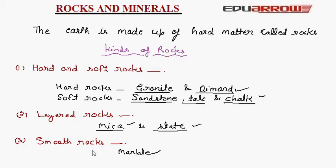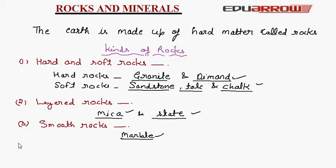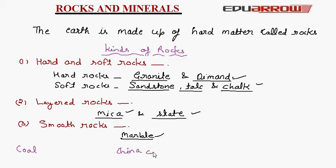There are some other kinds of rocks like coal. It is used for burning fire in houses and it can be hard or soft. Another type of rock is china clay. It is a soft rock and it is used for making pots.